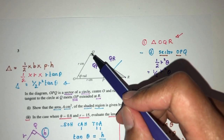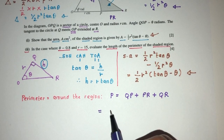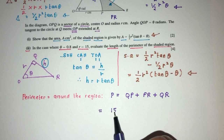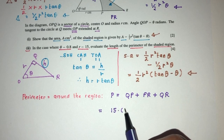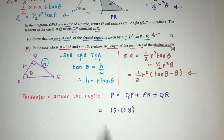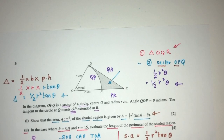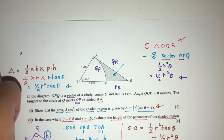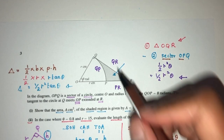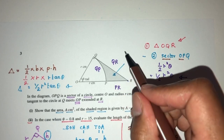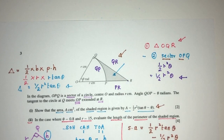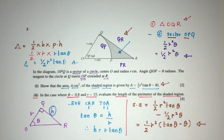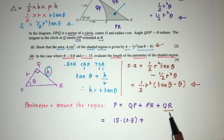QP is the arc length, given by the formula Rθ. The radius is 15 and theta is 0.8, so the arc length QP = 15 × 0.8. We already found that QR = R·tan θ, the height of the triangle, which is R = 15 and tan θ with θ = 0.8. Now we also need to find PR.